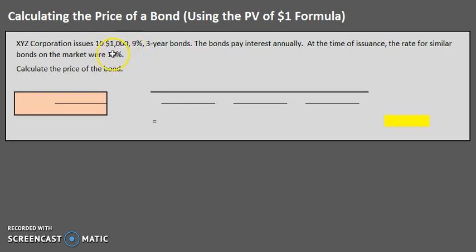Bonds with similar risk on the market are currently paying 12%. From the perspective of an investor, if someone has a bond paying 9% and someone else has a bond paying 12%, which is more attractive? It would be the 12% — they want to maximize their return. So as XYZ Corporation, when we issue a bond that pays less than the market rate, we are going to have to issue it at a discount — meaning at a price below the $10,000 face value.